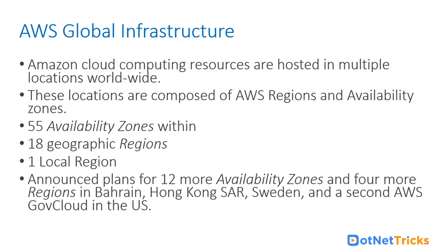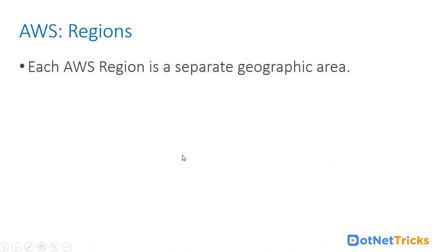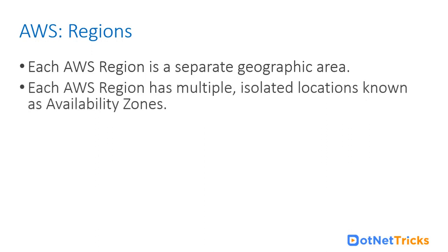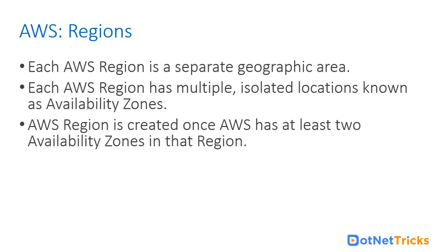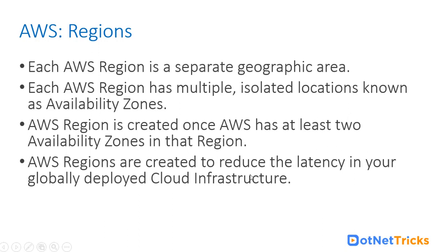There is an announced plan for 12 more availability zones and four more regions in Bahrain, Hong Kong, Sweden, and a second AWS GovCloud in the US. An AWS region is a separate geographic area; each region has multiple isolated locations known as availability zones. A region is created once AWS has at least two availability zones. AWS regions are created to reduce latency and for business continuity and disaster recovery.